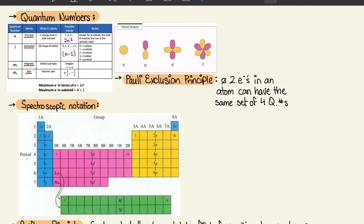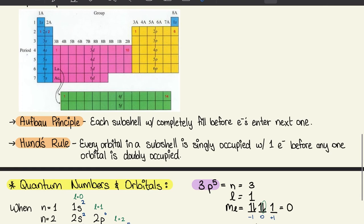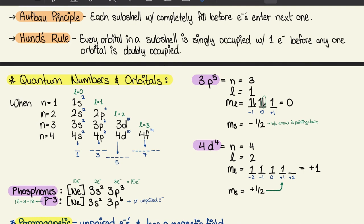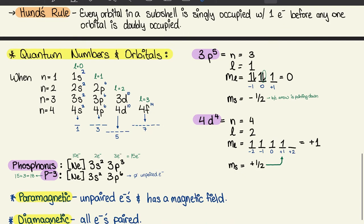The Pauli exclusion principle states that no two electrons in an atom can have the same set of four quantum numbers — this will be shown in the examples later. The Aufbau principle states that each subshell completely fills before electrons enter the next one. And Hund's rule states that every orbital in a subshell is singly occupied with one electron before any orbital is doubly occupied — that will be shown in the spin examples.